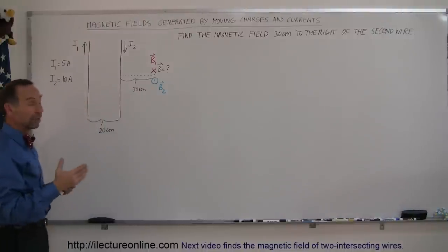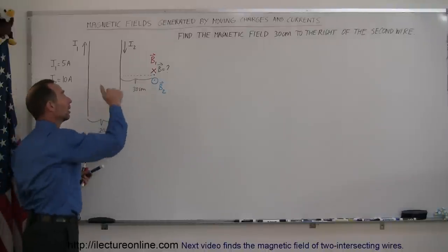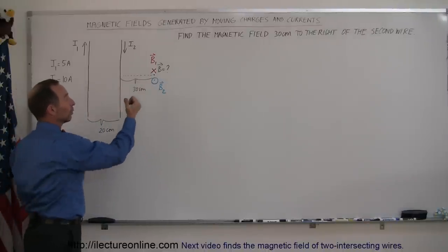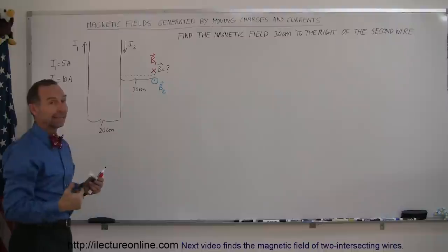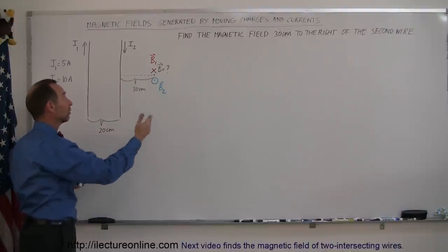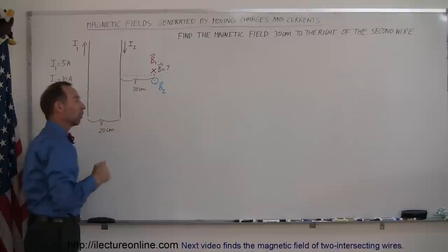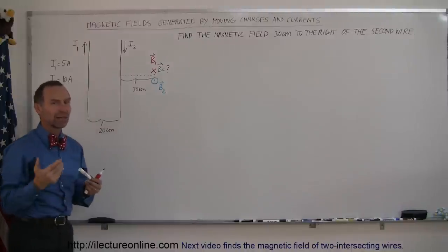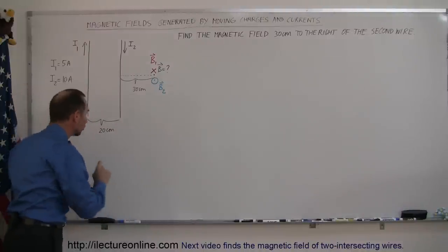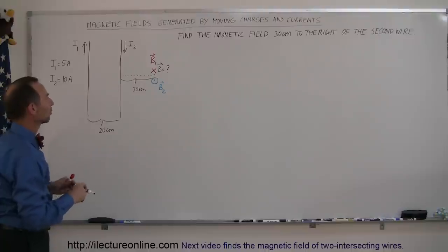Now, if the magnitude of B2 is larger than the magnitude of B1, then the net magnetic field will be out of the board. If the magnitude of B1 is larger than the magnitude of B2, then the net magnetic field will be into the board. So let's find the magnitude of each of the magnetic fields to figure out what the net magnetic field will be.